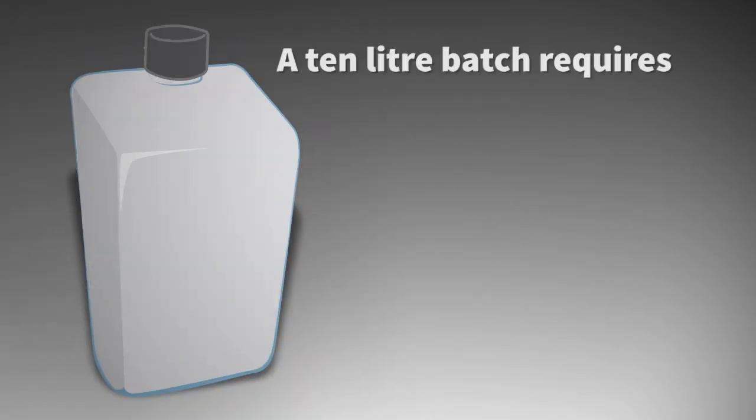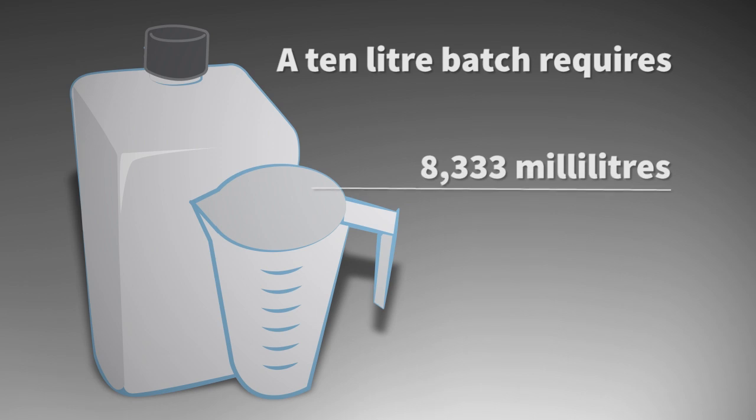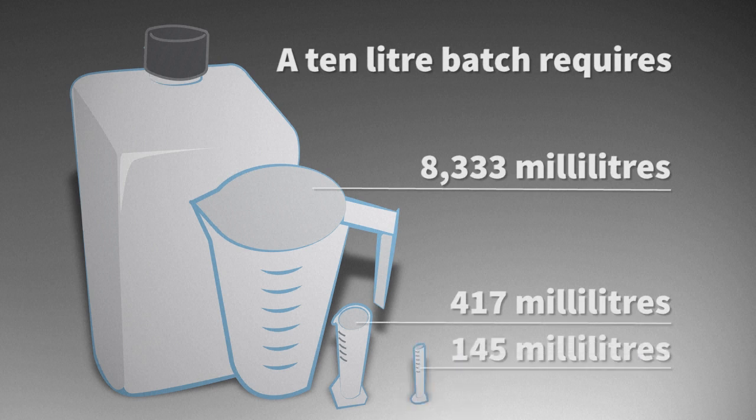A 10 litre batch requires 96% ethanol, 3% hydrogen peroxide, known as oxygenated water, 98% glycerol, commonly known as glycerine, used as a humectant.